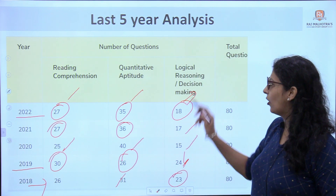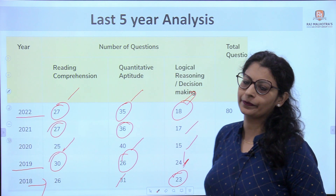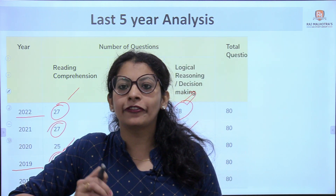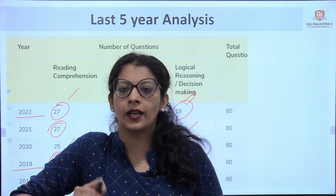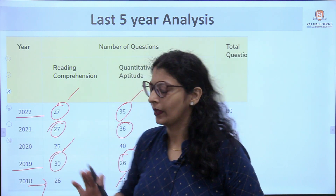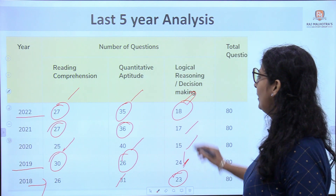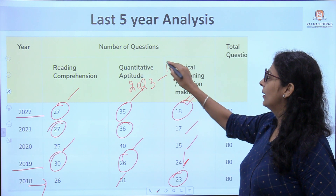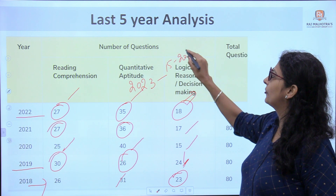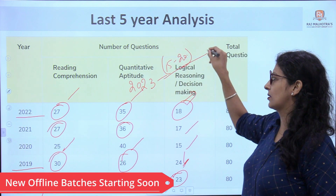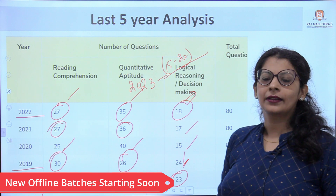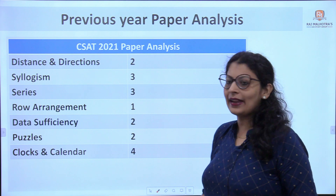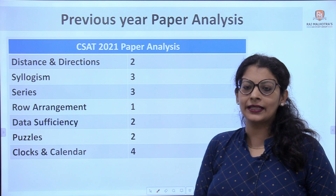In 2023, we expect 15 to 20 questions will come from reasoning, based on the last five years of study. Get prepared and study harder — as you know, the paper is becoming tougher and tougher, so practice deeply.